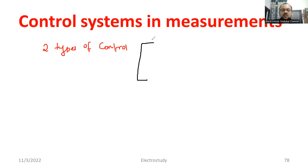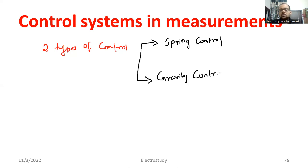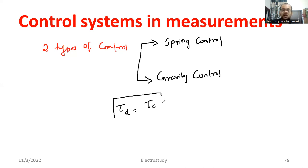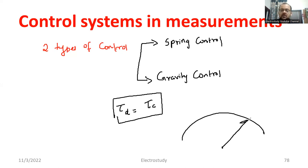The first one is known as spring control, and the second one is known as gravity control. In order to make the pointer steady, the deflection torque will be equal to the controlling torque. If the deflection torque is equal to the controlling torque, the pointer points at a steady position. So there are two types of control: one is gravity control and another is spring control.